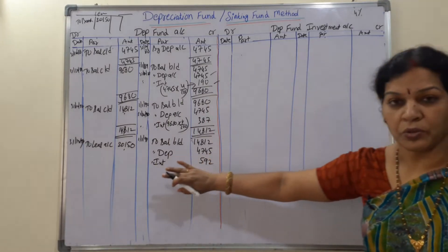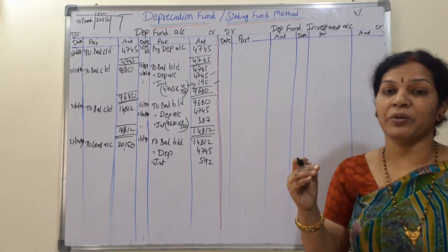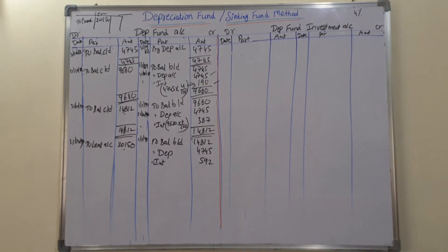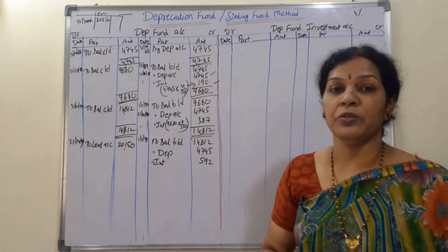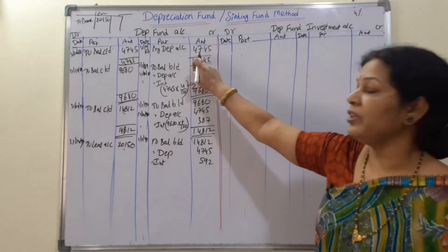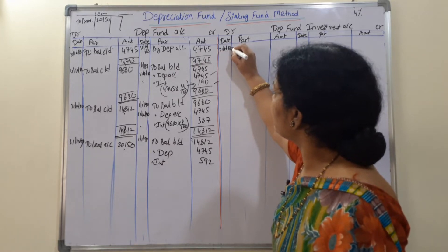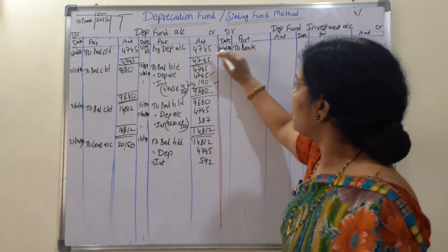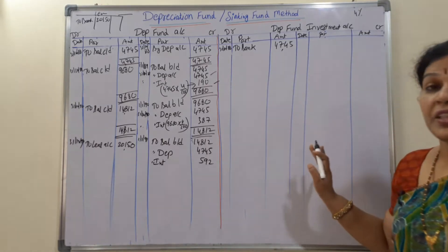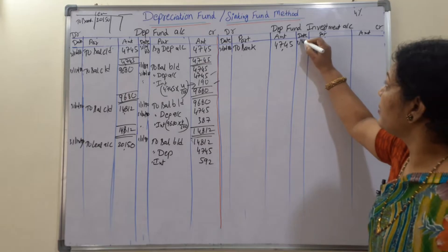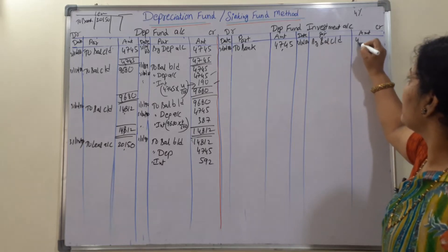In the depreciation fund investment account, every year we have to put our investments. For the fund account, we put investments at the end of the year. First year - what is there to invest? Only the depreciation. So 31/12/88 to bank - this amount we are going to put as investment. Balance carried down 4,745.